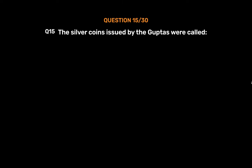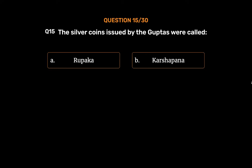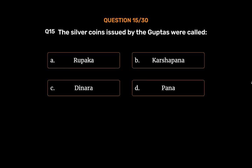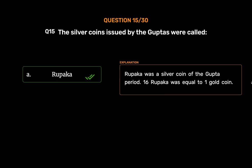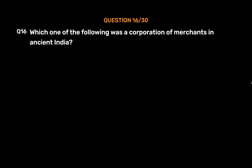Question number fifteen: The silver coins issued by the Guptas were called — Option A: Rupaka, Option B: Karshapana, Option C: Dinara, Option D: Pana. The correct answer is Option A, Rupaka. Rupaka was a silver coin of the Gupta period; 16 Rupakas were equal to one gold coin.